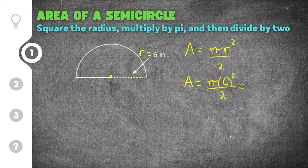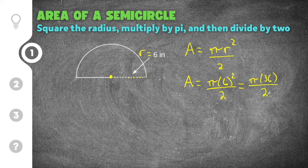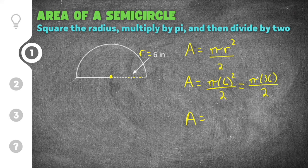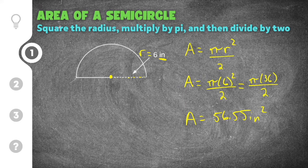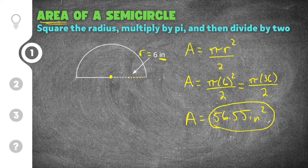Replacing r with six, we do the exponent first: six squared is 36, all divided by two. Then we calculate pi times 36 divided by two on the calculator and get 56.55. Our unit was inches, and since we're talking about area, the answer is 56.55 inches squared.